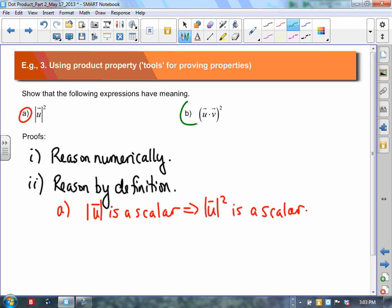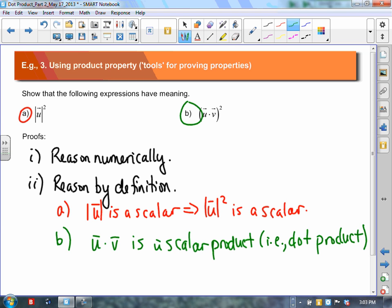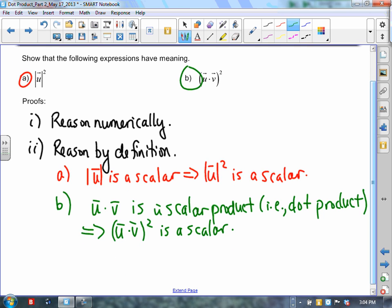We understand that vectors can have magnitude that makes sense, and if we square a scalar then we get a scalar and that makes sense. We also know that in part b we could use a similar line of reasoning to show that it too has meaning. We know that u dot v is a scalar product, right, so that's just another way of saying dot product. And if it's a scalar product it produces a scalar, thus u dot v squared has meaning because it too is a scalar.